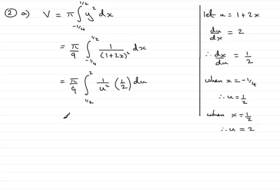So cleaning this up, we can take this half, so we have π over 18, and then we have the integral of 1 over u squared, which I'm going to rewrite as u to the minus 2, with respect to u, and that's going between a half and 2.